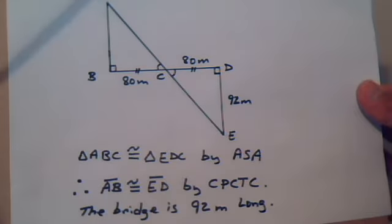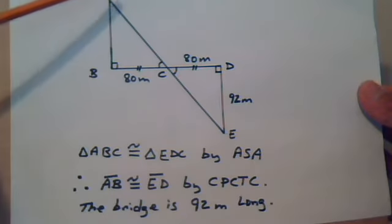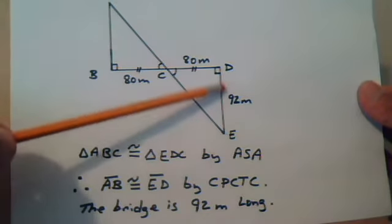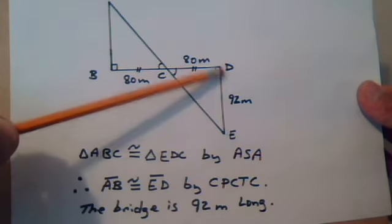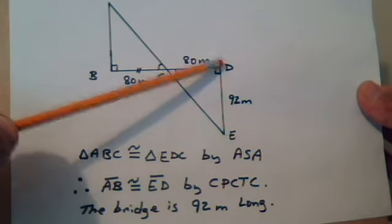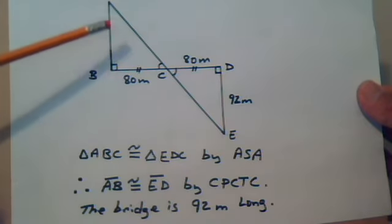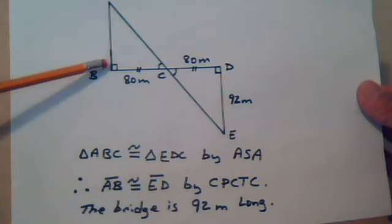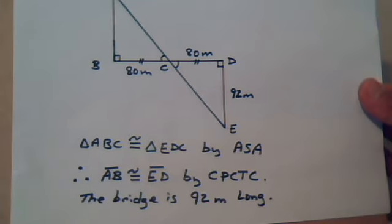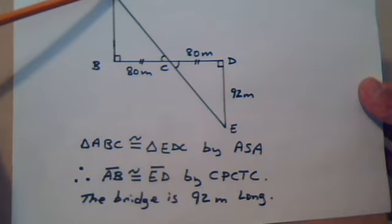So what we need for our problem is this. In other words, line segment ED should equal line segment AB. So this 92 can be put over here, and that would be the length, the size of the bridge, the length of this distance.